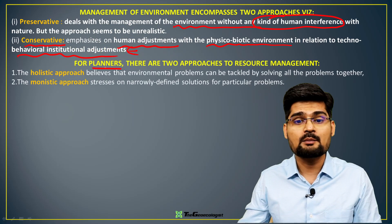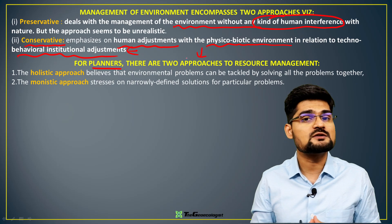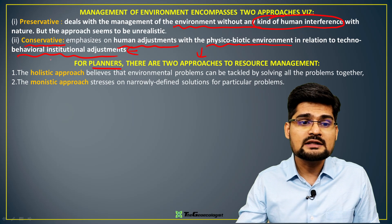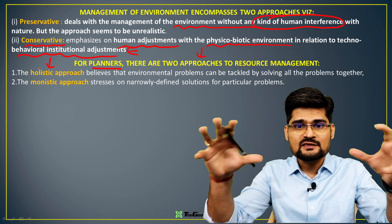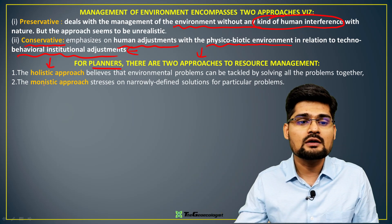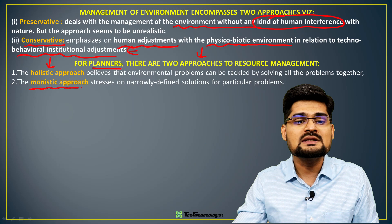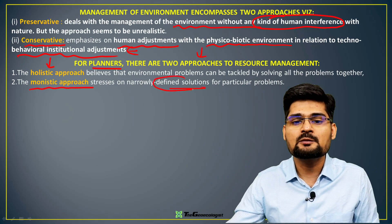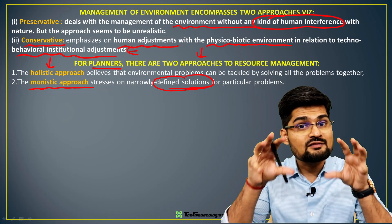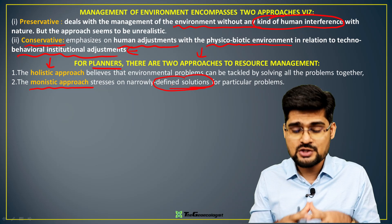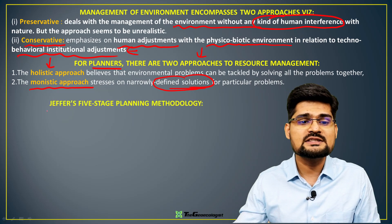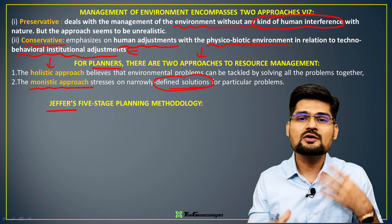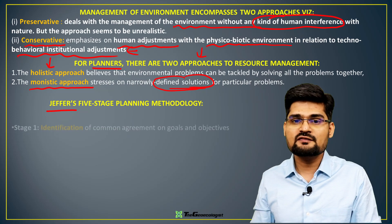For regional planners and developers, there are two approaches to resource management in regional planning and development: the holistic approach, which takes care of the entire structure, and the monistic approach, which focuses on a contextually defined problem and its solution within a given context.